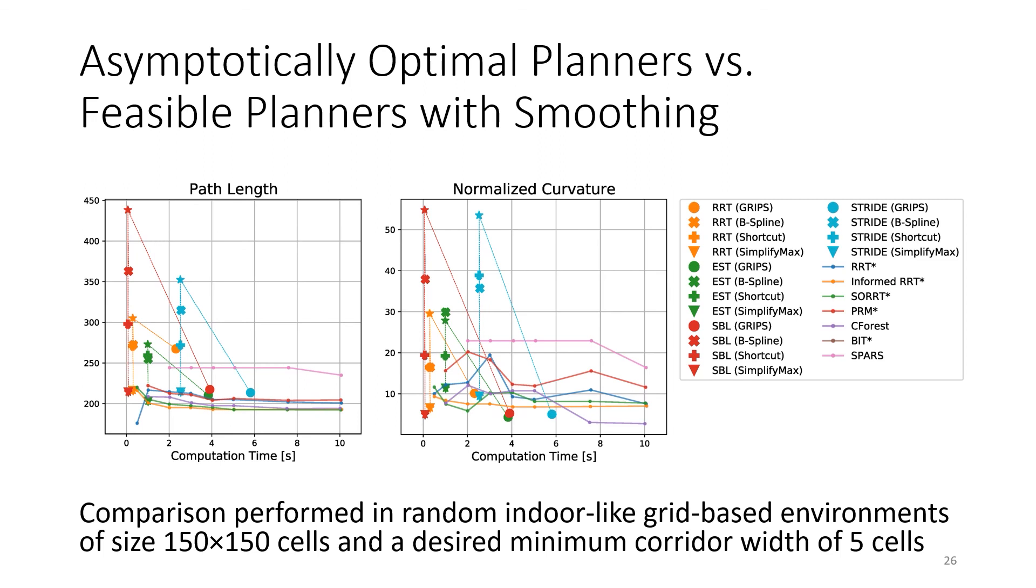In another experiment, we compare the different combinations in random indoor-like grid-based environments using the Reeds-Shepp steer function. As we can see from the figures, the post-smoothing algorithms, grips and SimplifyMax often significantly decrease the path length and maximum curvature, with SimplifyMax typically running faster.